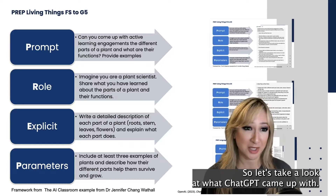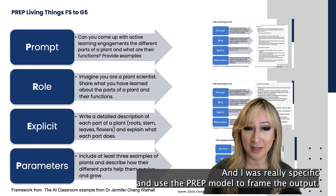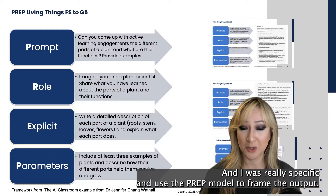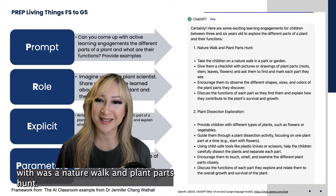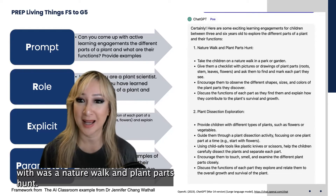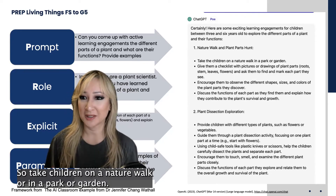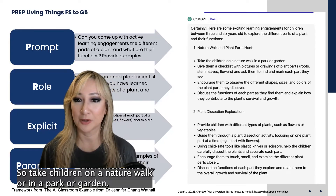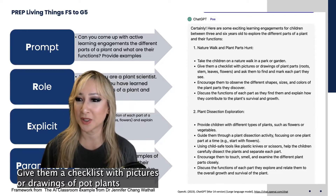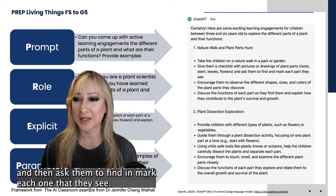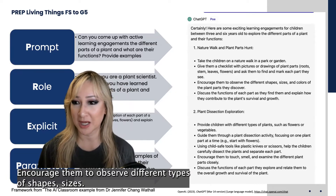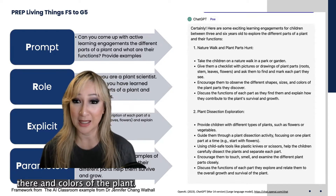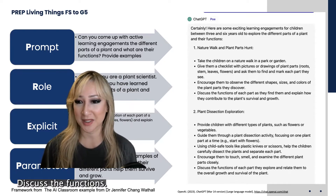Let's take a look at what ChatGPT came up with when I was really specific and used the PREP model to frame the output. One of the great active learning engagements it came up with was a nature walk and plant parts hunt — take children on a nature walk in a park or garden, give them a checklist with pictures or drawings of plant parts, and ask them to find and match each one they see. Encourage them to observe different types of shapes, sizes, and colors of the plant, and discuss the functions.